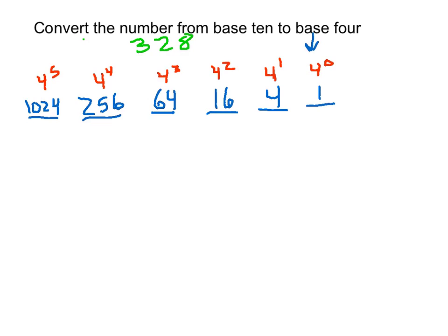We know in base 10 that 328 represents 8 ones, 2 tens, and 3 one-hundreds. We want to convert this to base 4.